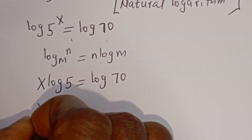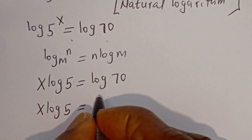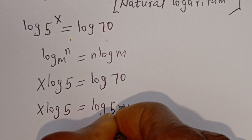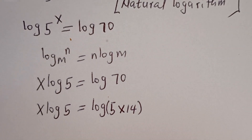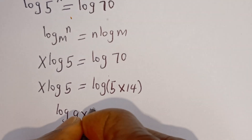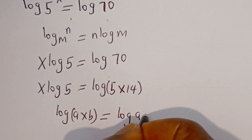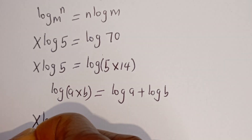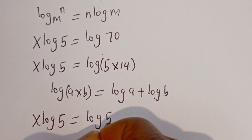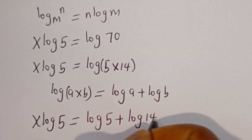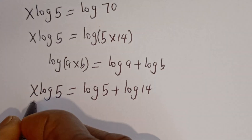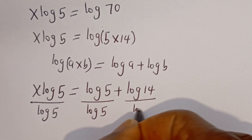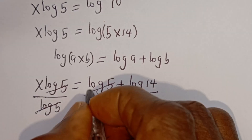We have X log 5 is equal to log 70. Now, log 70 can be written as log of 5 multiplied by 14. If you have log A multiplied by B, this is equal to log A plus log B. This can be written as X log 5 is equal to log 5 plus log 14. Let's divide both sides by log 5. This divided by log 5, this will cancel this, this will cancel this.